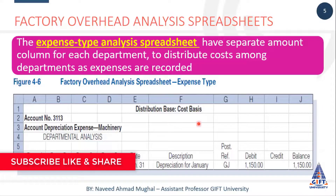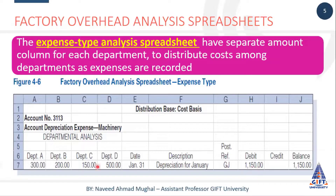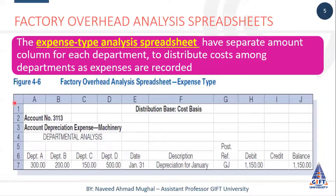In that ratio we divide that expense. Eleven fifty ka jo expense hai woh hum log different departments mein divide kar deenge. Aur un ki jo division ki ratio hogi woh cost basis hogi - ke jitna jitna asset jis department mein use ho raha hoga, us ki cost ki basis ke upar un ki jo depreciation hogi us ki distribution kar deenge. So this is the format of factory overhead analysis sheet expense wise.